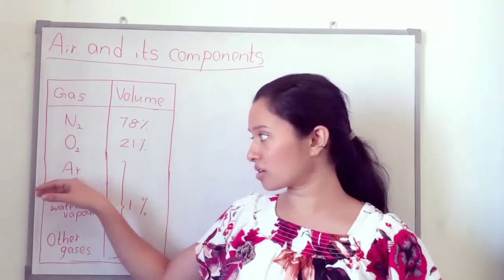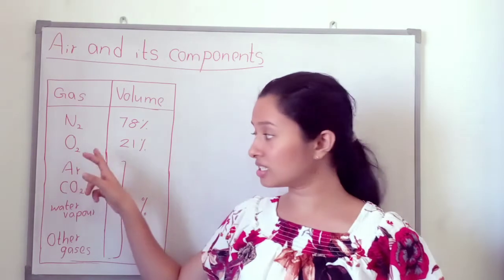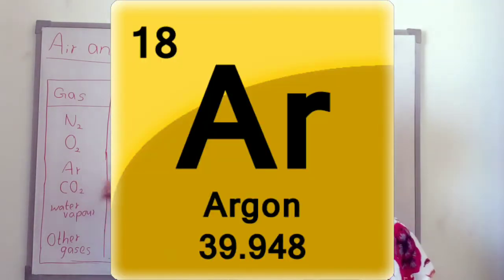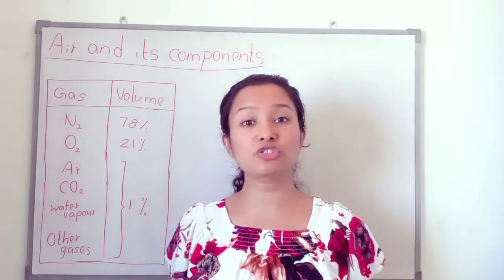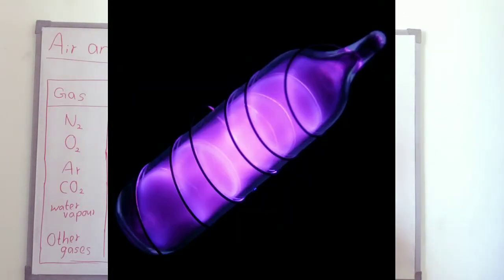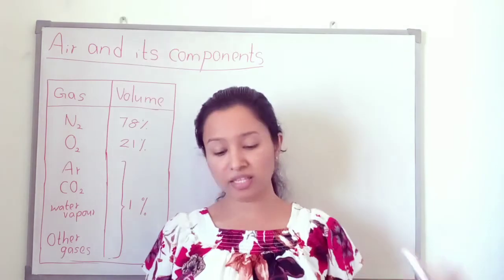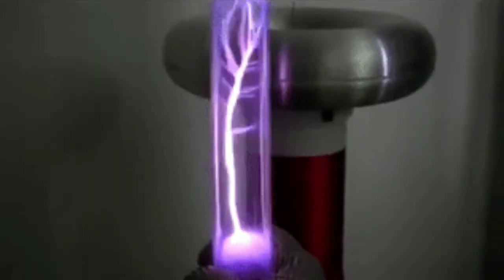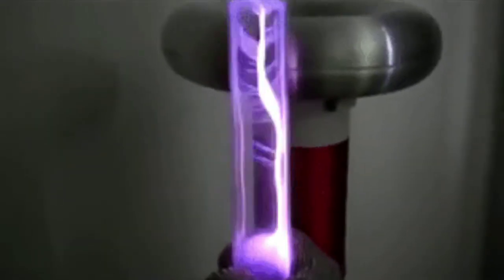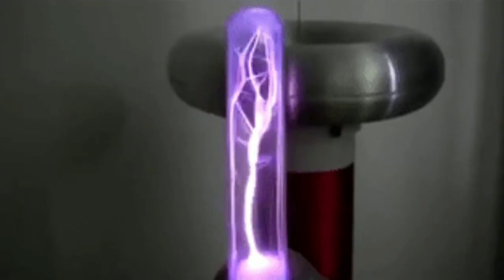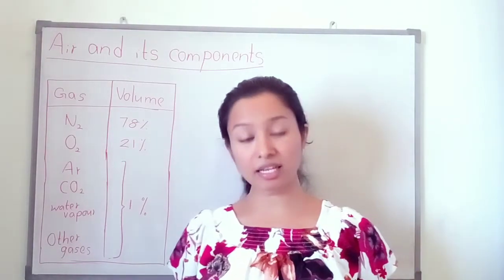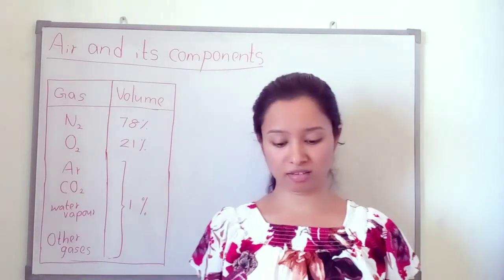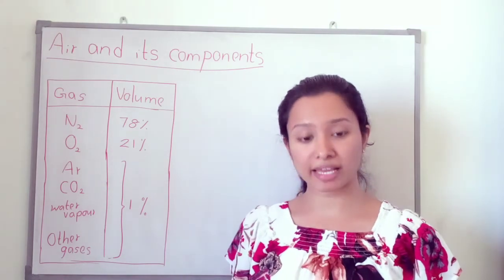Argon is the third most common gas after nitrogen and oxygen. It is called an inert or noble gas, meaning it does not chemically react with other elements. Argon is used to fill filament bulbs and to produce electric lamps that emit an orange color.